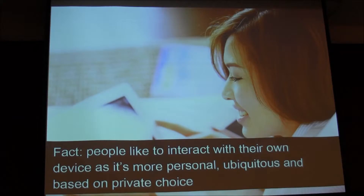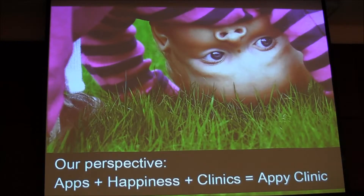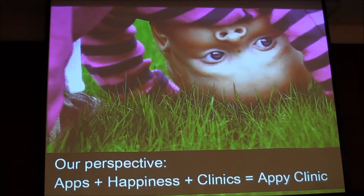They want to consume that relationship the way they like to do it. So what I'd like to propose today is a new way of thinking about that relationship. Our perspective is the following equation: bring apps — which are important to the smart and mobile devices you have today — happiness and fun, and clinics, and add them all together into a concept I'd like to call 'Appy Clinic,' which I'll elaborate on as we go. This picture of a kitten looking at the world upside down represents the perspective of seeing things differently, because it's not always the same formatted way of thinking that works. Sometimes, looking at things upside down really helps.